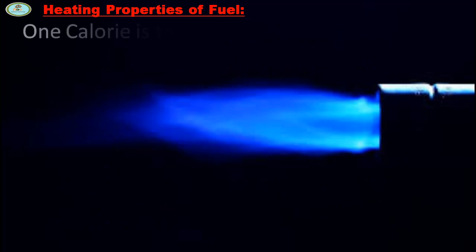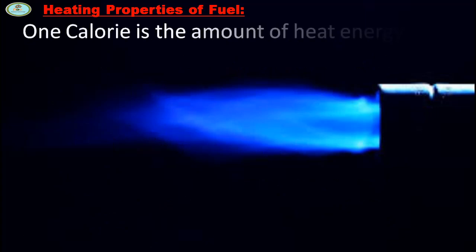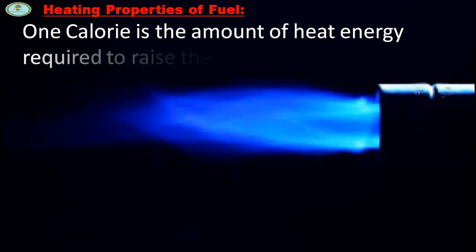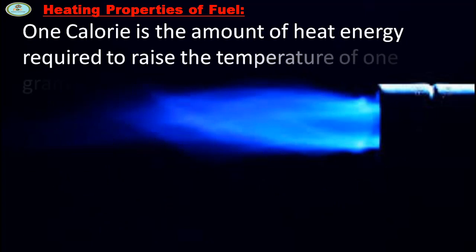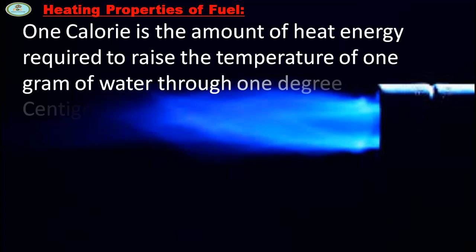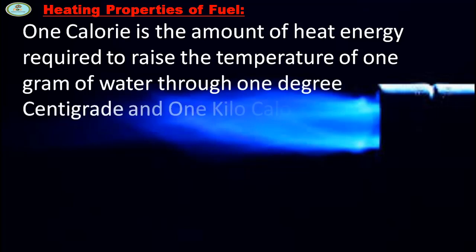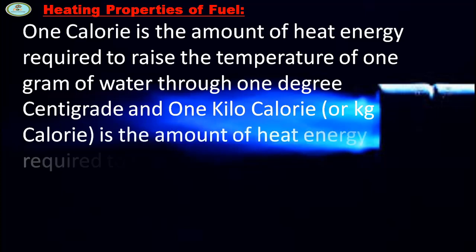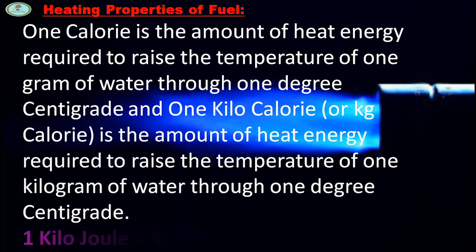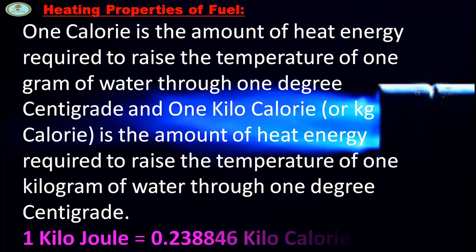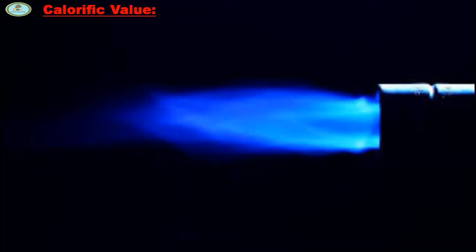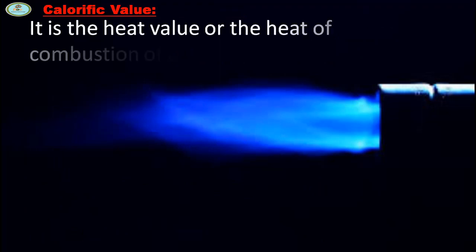1 Cal is the amount of heat energy required to raise the temperature of 1 gram of water through 1 degree centigrade. 1 kJ is the amount of heat energy required to raise the temperature of 1 kg of water through 1 degree centigrade. 1 kJ is equal to 0.238846 kcal.